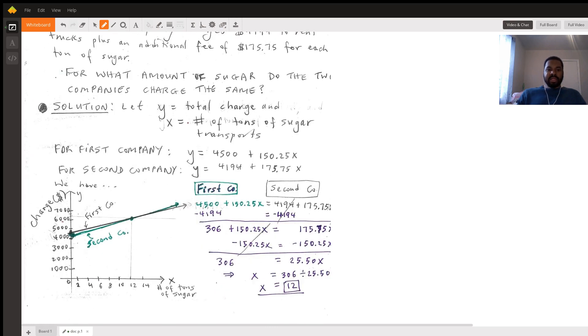Let y equal the total charge and let x equal the number of tons of sugar. So x is equal to the number of tons of sugar that the company transports - tons of sugar transported.